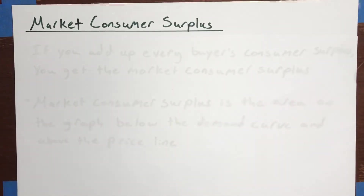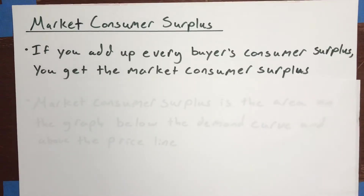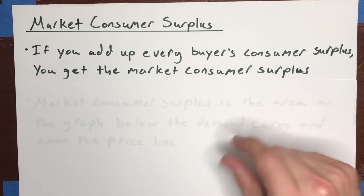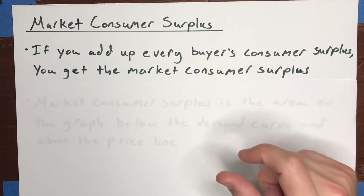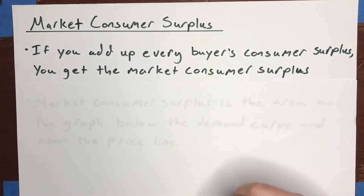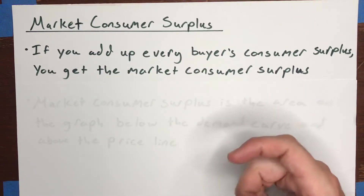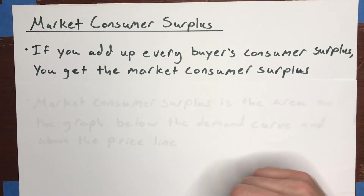Now in a market you've got multiple different consumers, and it's pretty simple to go from the individual level to the market level. If you take every consumer in a market and measure his or her consumer surplus, then add up the consumer surplus of all those consumers, you get the market consumer surplus. It turns out that you can use the demand curve to calculate that market consumer surplus quite simply.